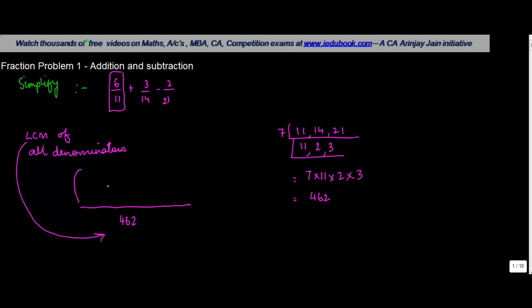So how do we arrive at each of the numbers here? We will take the denominator, we will divide it by the denominator of this and we will multiply it by the numerator. So when you do this, 11 will go into 462 42 times. 6 into 42 is 240 plus 12, which is 252.